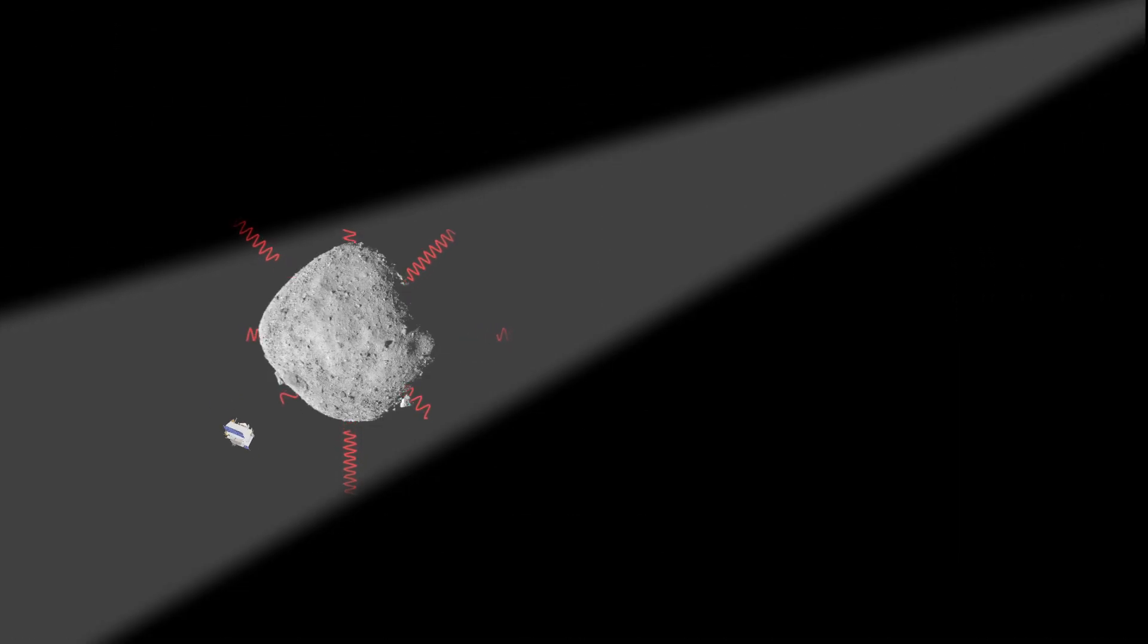OTIS works by detecting and analyzing infrared radiation coming from the asteroid. When the sun heats up the asteroid, some of that energy is radiated back into space as infrared radiation.